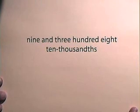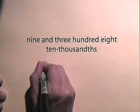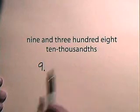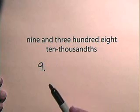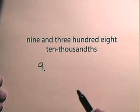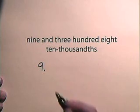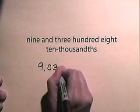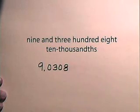Now let's read this number — nine and three hundred eight ten-thousandths — and let's write it as a decimal. We have the whole number nine, and as a decimal we have three hundred eight ten-thousandths. To have the ten-thousandths place, we need to go to the fourth decimal spot, so this will be three hundred eight ten-thousandths.